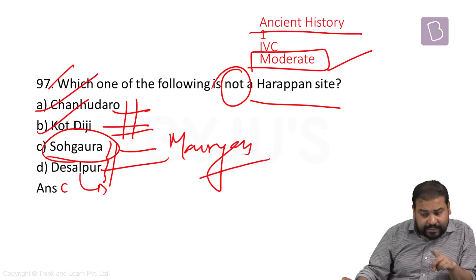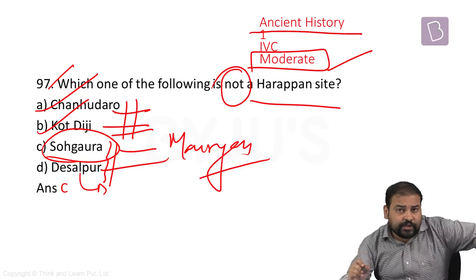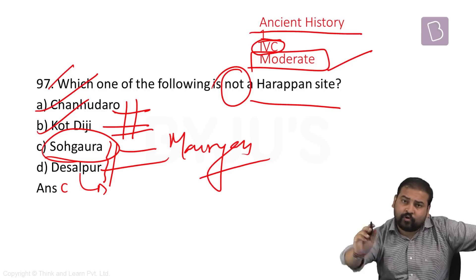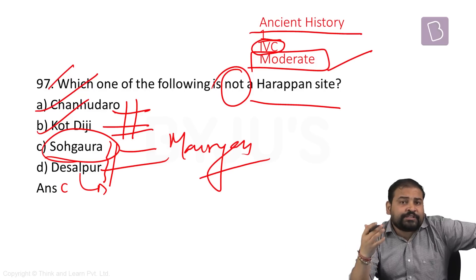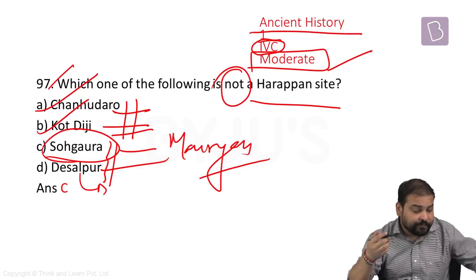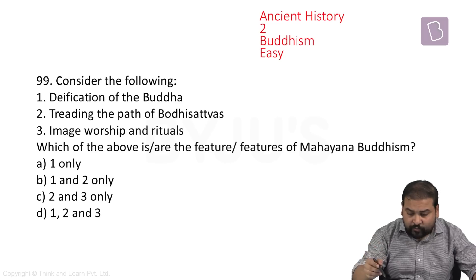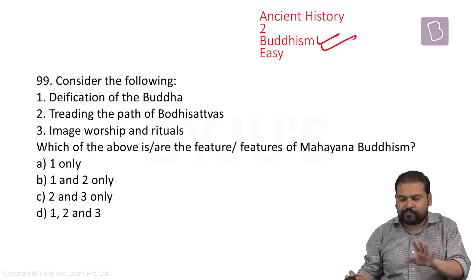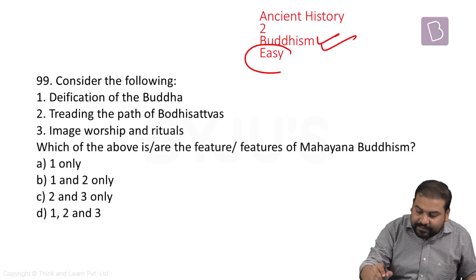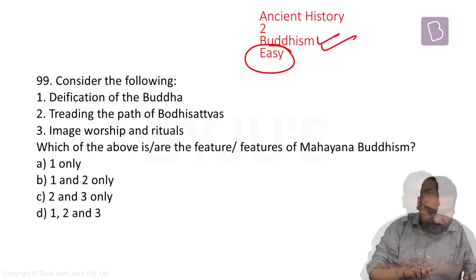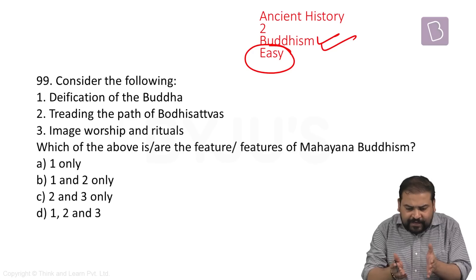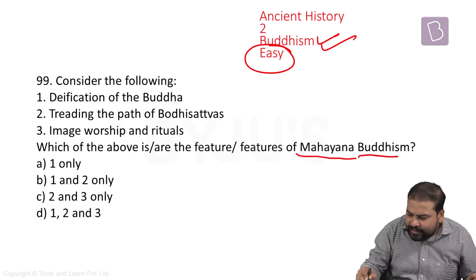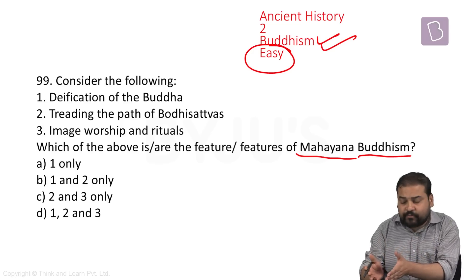Though they asked three questions from ancient, one question is coming from IVC — which is always a very important chapter as far as ancient is concerned. Moving to the second question of ancient, another important chapter has been asked: Buddhism. I have marked it as easy.